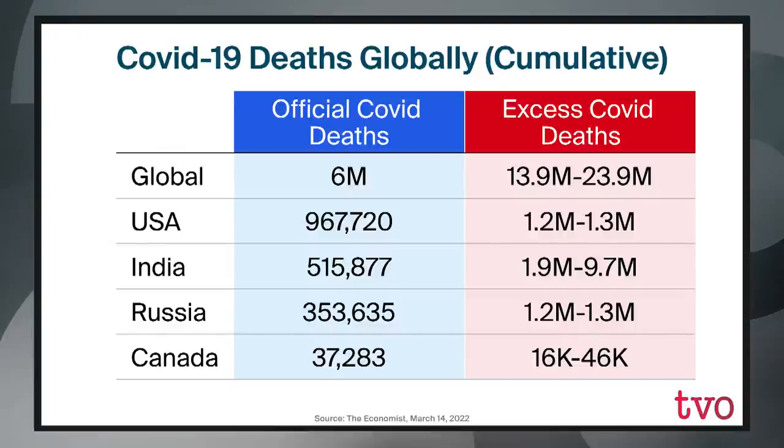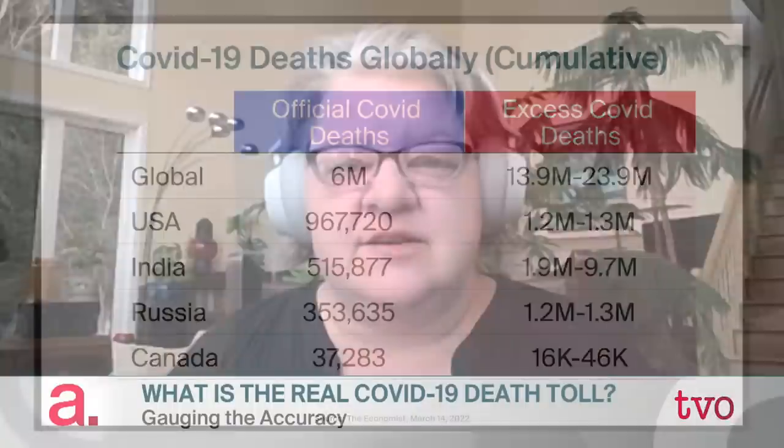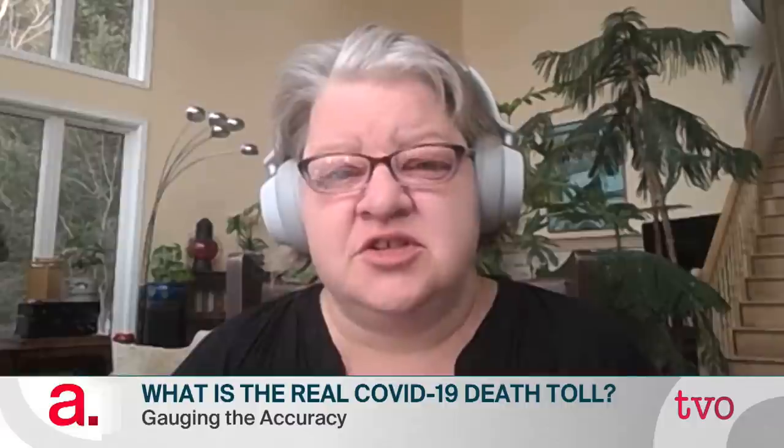That's the only one where the number in the excess column could be lower than the number in the official column. A major reason for that is the slowness of Canada's all-cause mortality death reporting. We haven't seen completion of death reporting for wave one yet for Canada — we'll probably be there by about June or so. In wave one, the ratio of reported COVID-19 deaths to excess mortality was considerably lower. I think what we're going to see for Canada is that over a couple of years, the lower bound of that excess mortality number will rise considerably.